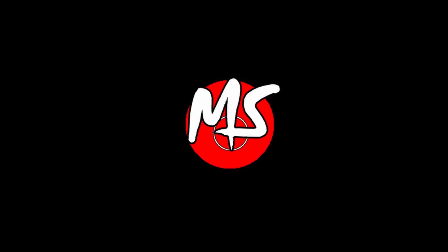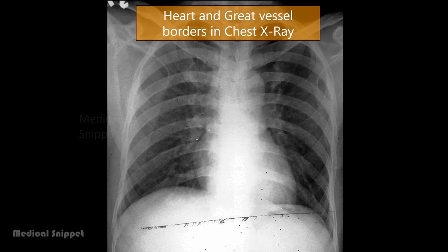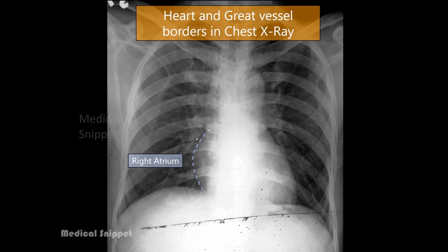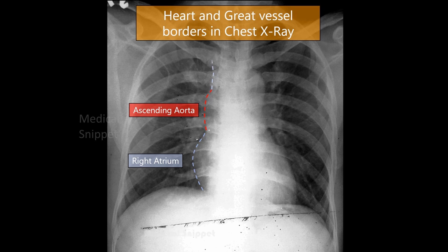In this video we will discuss about the cardiac borders in chest X-ray. The right border of the cardiomediastinal silhouette is formed by the right atrium in the lower part, the ascending aorta in the middle, and the superior vena cava in the upper part.